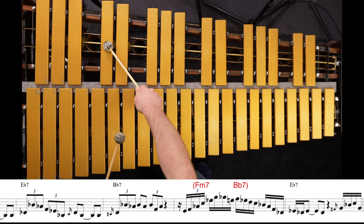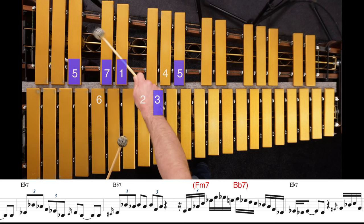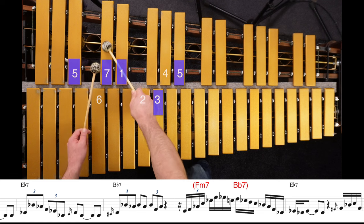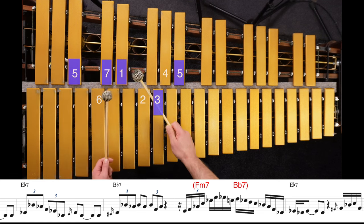This Db is already anticipating the Eb7 in the next bar, so that's the seventh. And you'll notice I came out on my right mallet there, so I kind of did this awkward—you can use some different sticking if you want to in that spot.